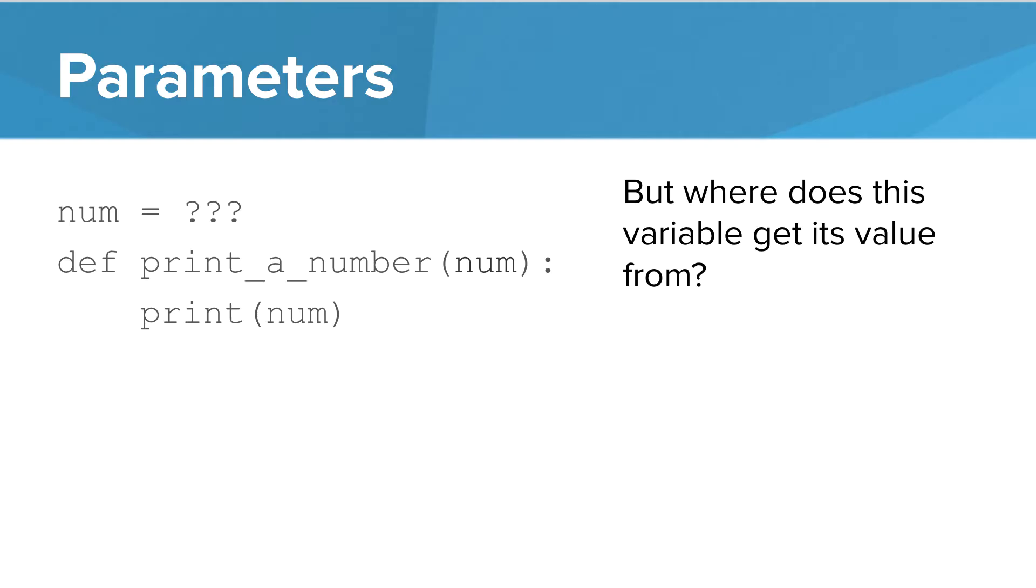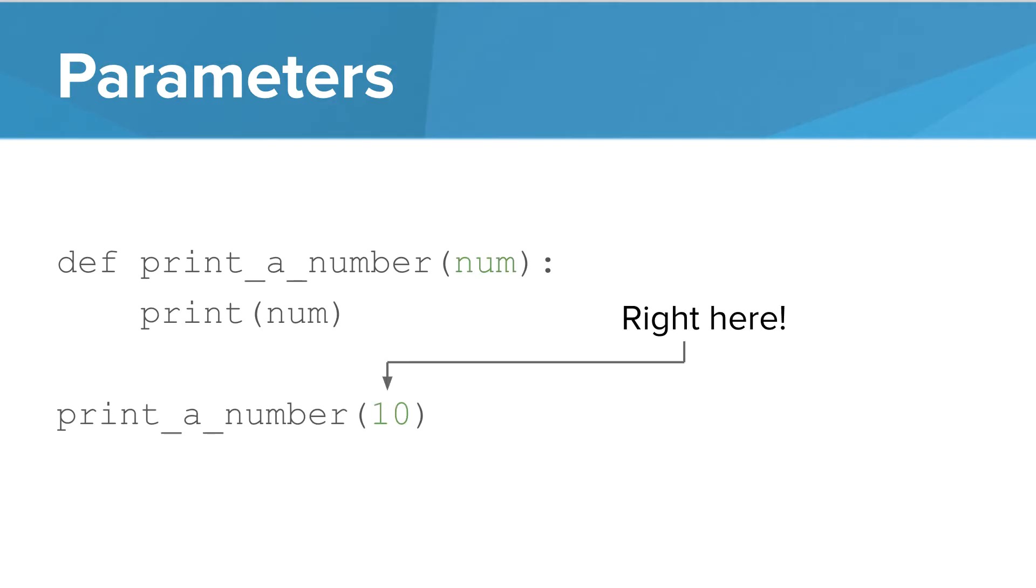But where does this variable get its value from? You actually give the variable a value when you call the function. This is sort of equivalent to saying num equals 10 inside the function.